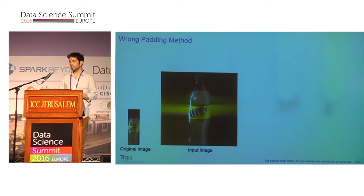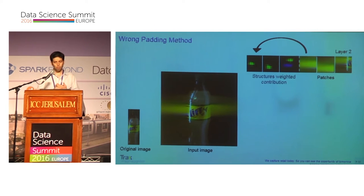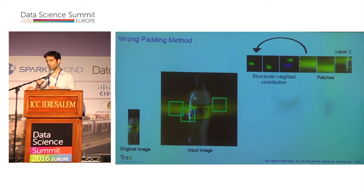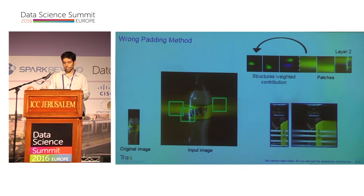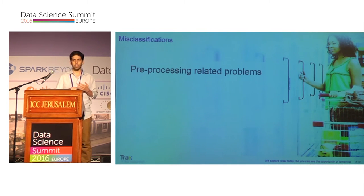Now I'll show how we use this method to explore problems in our network. Looking at the three most dominant neurons at layer two, we see the patches and the elements that contributed most to their activation. But looking at the green rectangles on the input image, we can see that unfortunately the network learned the padding area — the insignificant part of the image — rather than focusing on the unique visual identifiers. This may cause misclassification in many cases.